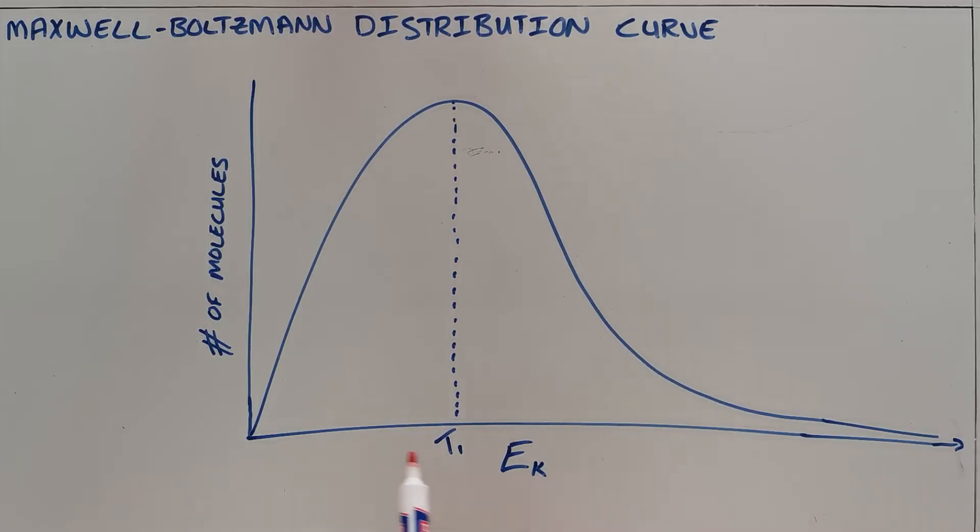So what this curve shows us is that a particle can have a very very small value of energy, but it can also theoretically have a very very large value for its kinetic energy, but the average energy is centered around T1.